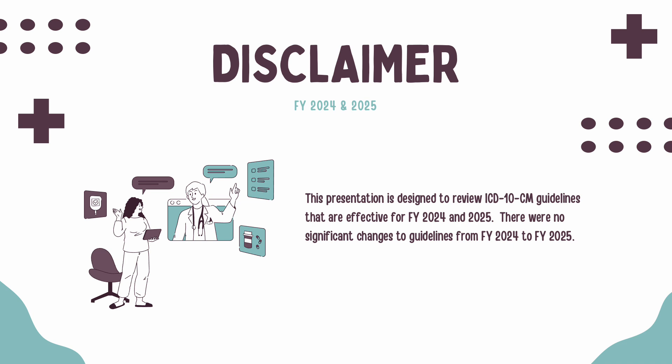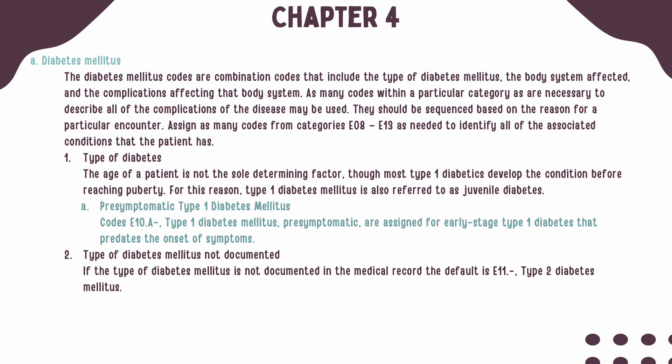There is one small change from 2024 to 2025, and that will be marked by teal text on the first slide. Chapter 4 only contains guidelines for diabetes. When coding for diabetes, your codes will be combination codes that include not only the type of diabetes, but also the body system affected and the complications of that body system. You should use as many codes as necessary within a particular category to describe all complications that are present. When multiple codes are necessary, they should be sequenced based on the reason for the encounter.